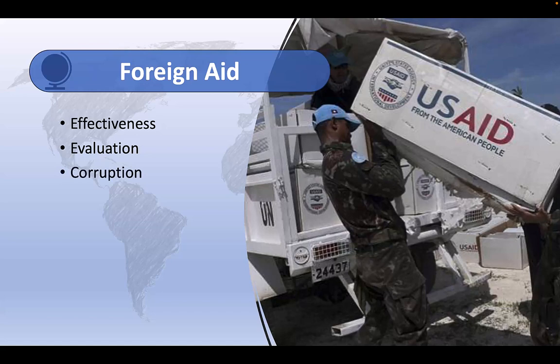Corruption and weak governance in recipient countries sometimes pose challenges to that effectiveness. Funds intended for development projects can be misappropriated or mismanaged, undermining the aid's impact. Weak institutional capacity, a lack of transparency, and inadequate accountability mechanisms can all hinder the efficient or effective utilization of aid and erode public trust. Indeed, history is replete with examples like Ferdinand Marcos in the Philippines or Mobutu Sese Seko in Zaire, where billions of dollars worth of foreign aid served only to enrich the political elite, delivering little real benefit for the intended recipients. Long-term dependence on foreign aid can create a sense of dependency and hinder the recipient countries' efforts to develop sustainable solutions. Over-reliance on aid can discourage domestic resource mobilization, impede self-reliance, and undermine local ownership of development and democratization processes.